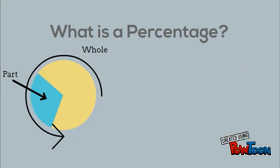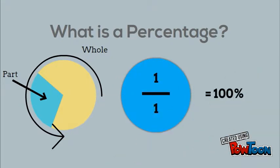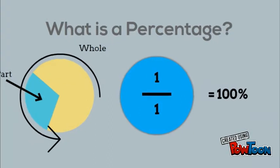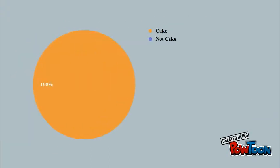A percentage is a representation of a fraction where one whole is equal to 100. 100% represents one whole. If I have 100% of a cake, I have the whole thing.